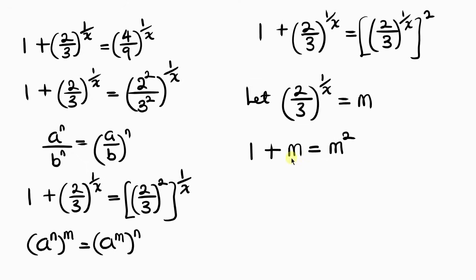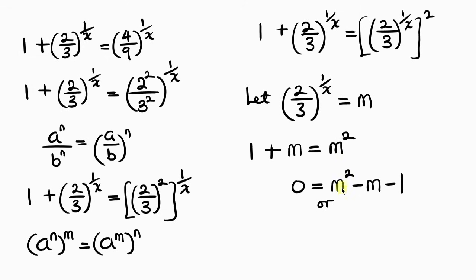Our next step is to move everything to the right-hand side. When m moves to the right it becomes minus m, and when 1 moves to the right it becomes minus 1. Rearranging, we get m squared minus m minus 1 equals 0.